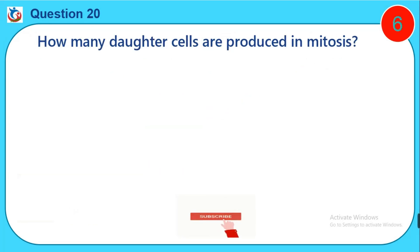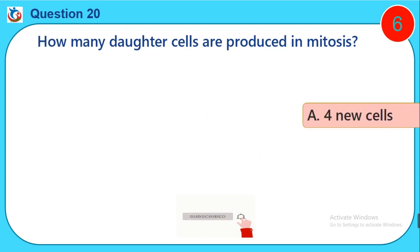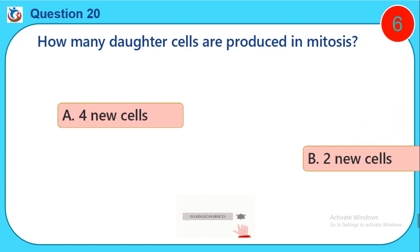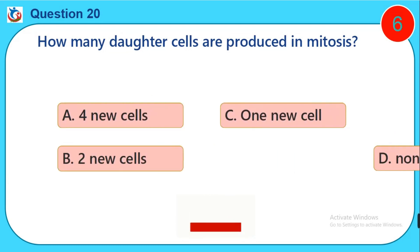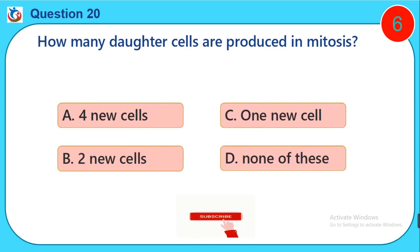Question twenty: How many daughter cells are produced in mitosis? A) Four new cells, B) Two new cells, C) One new cell, D) None of these.